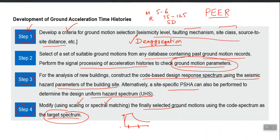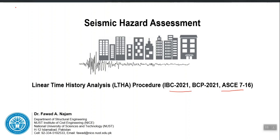In spectral scaling, you simply apply a constant factor to your ground motion. For example, let us say you plot the target spectrum of your site — SA versus time period. This is the DBE-level spectrum for your site and you want to perform time history analysis for DBE level. This curve defines the hazard level of your site.